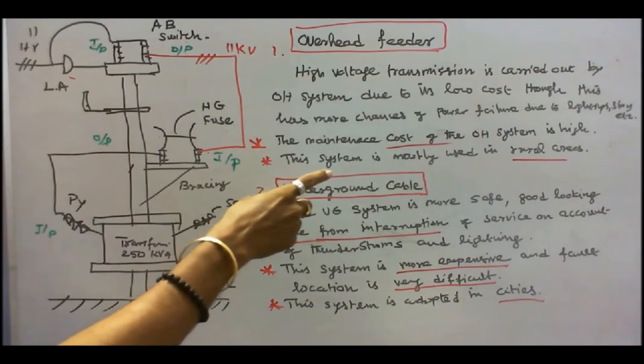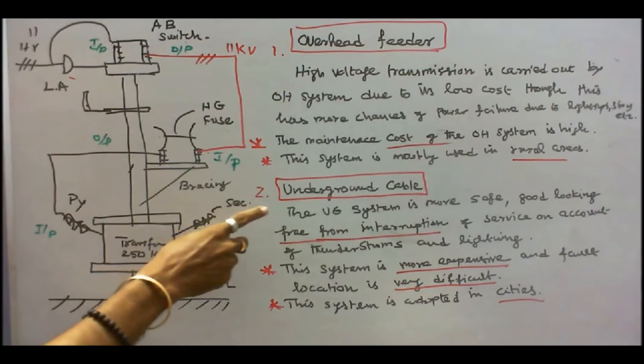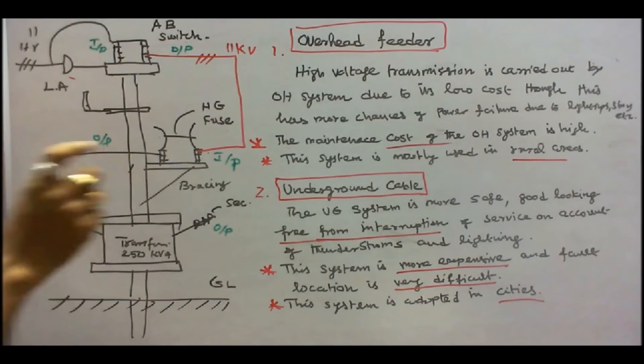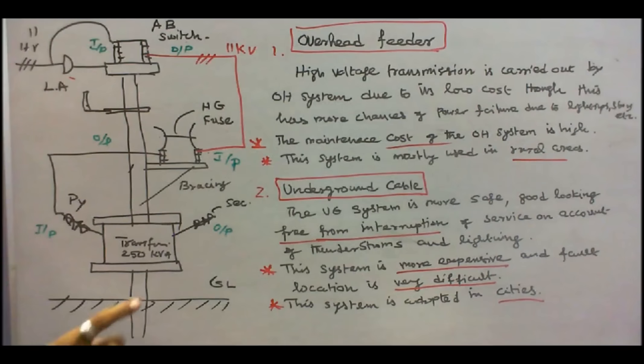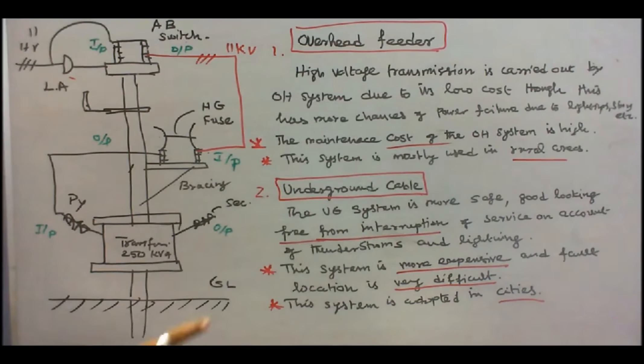Number two, underground cables. The system is more safe, good looking, free from interruption of service on account of thunderstorms and lighting. The system is more expensive and fault location is very difficult. The system is adapted in cities.